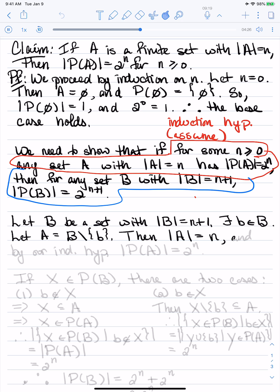And what we want to do now is let A equal the set B take away that element b. Then, the set A has cardinality n, and by our induction hypothesis, its power set has size 2 to the n.